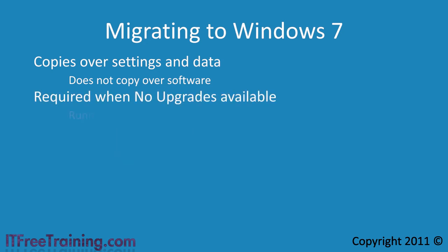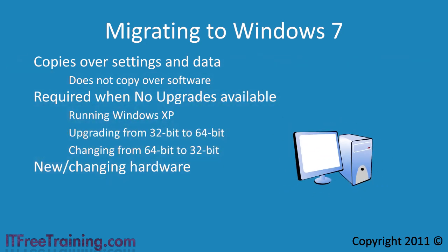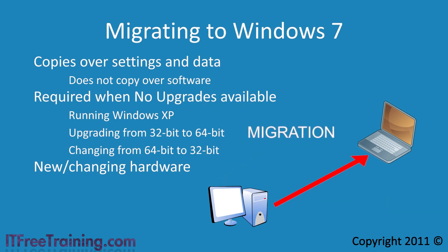For example, if you are running Windows XP there are no upgrade paths available if you want to change from a 32-bit version of Windows to a 64-bit version of Windows. The same is true if you want to change from a 64-bit operating system to a 32-bit operating system. If you purchase new hardware or change hardware you may also want to perform a migration — for example, changing from a desktop computer to a laptop. In situations like these an upgrade is not possible and your only choice is to perform a migration.